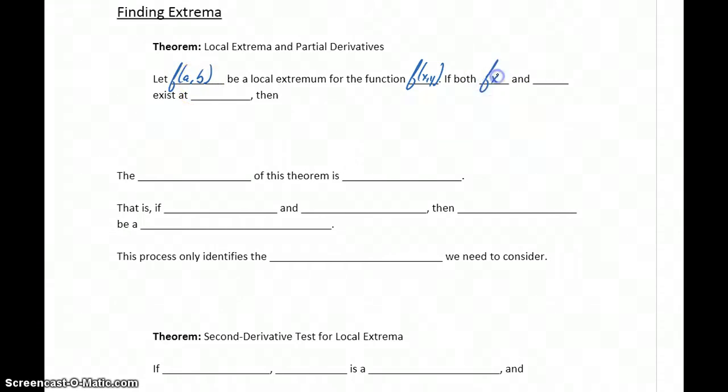If both f sub x, the derivative with respect to x, and f sub y, partial derivative with respect to y, exist at this given point (a,b), then the first derivative with respect to x evaluated at that point (a,b) should be equal to 0, and the first partial derivative with respect to y evaluated at that point (a,b) should also be equal to 0.